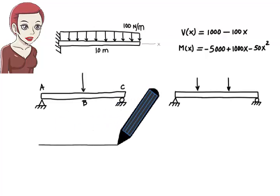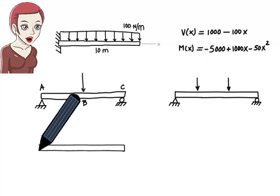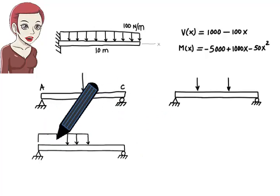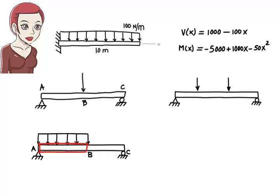For example here, the uniformly distributed load divides the beam into two segments: segment AB, which is directly under load, and segment BC, which is load free. Therefore, we need one set of shear and moment equations for the left segment of the beam, and another set of equations for the right segment of the beam.